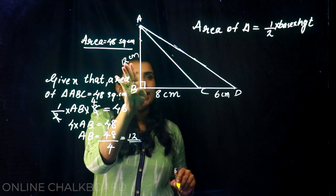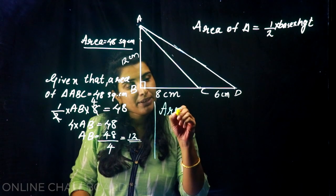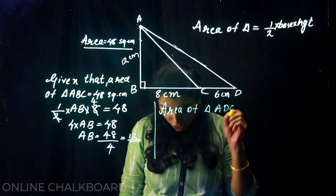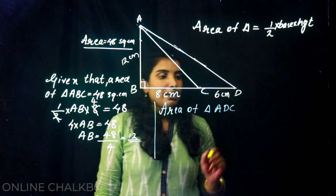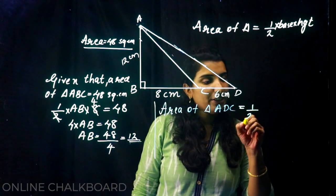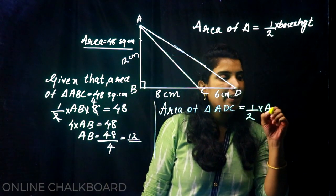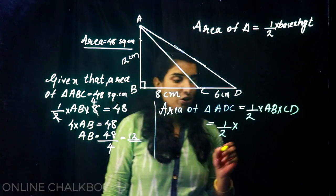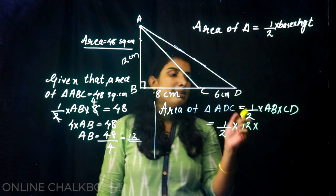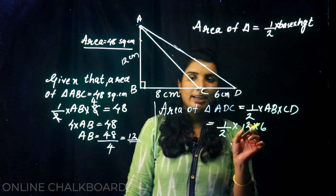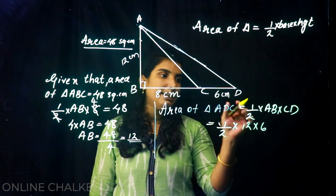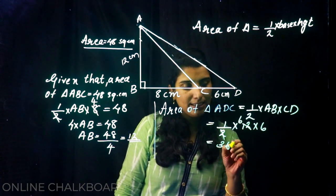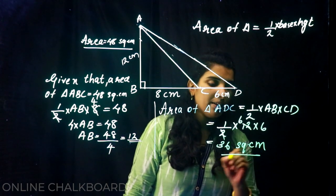We have AB equal to 12 cm. Now, the area of triangle ADC is equal to half into AB into CD, which is half into 12 into 6.